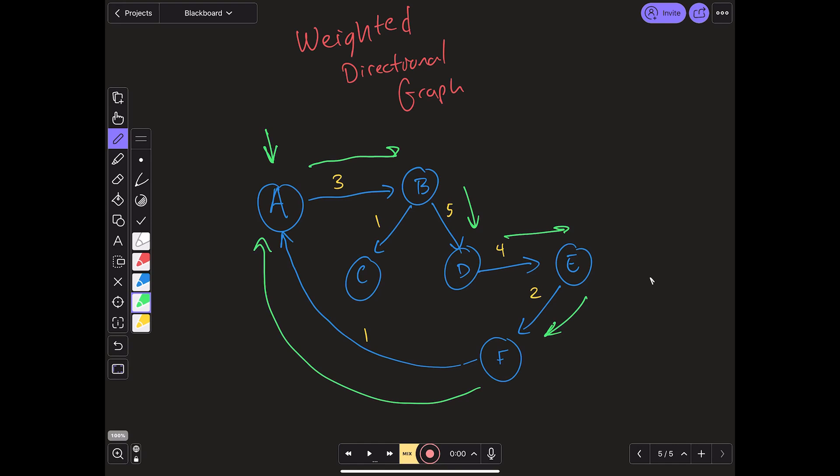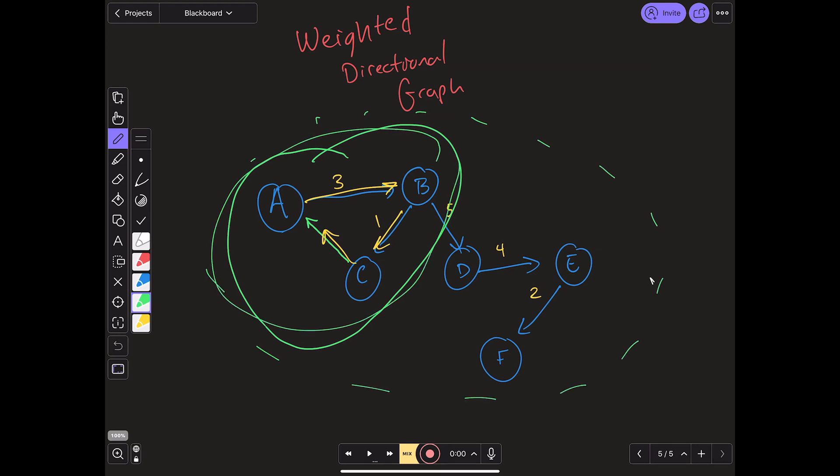When you have a graph that has at least one cycle, which means it is directed and one node can get back to itself by going through a specific path, that is known as a cyclical graph. Now it has to have at least one. But let's say, for example, we were to erase the connection between F and A. Well, now there's no way for F to get back to itself, so it won't actually be able to do it. However, if we were to, for example, connect C to A, well, we now have at least one cycle here again because A can get back to itself by going through B, then C, and then back to itself. So even though the cycle doesn't contain the entire graph, it is still said to be a cyclical graph because at least one node can get back to itself.